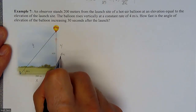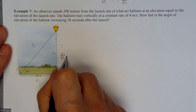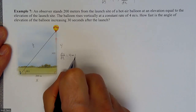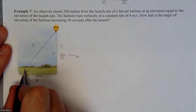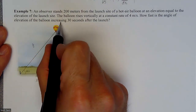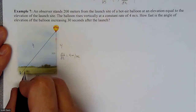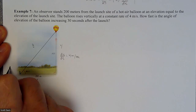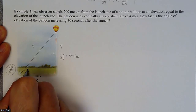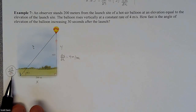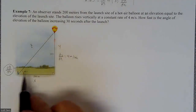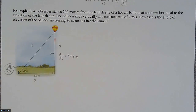The rate at which the balloon is rising is 4 meters per second. We need to find how fast the angle of elevation of the balloon is increasing 30 seconds after launch. So we're looking for d theta dt — the rate at which the angle is changing. This means it won't be a Pythagorean theorem problem; we'll need a trig function — either sine, cosine, or tangent, depending on the situation.